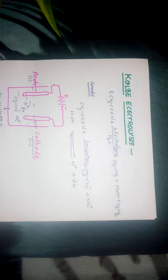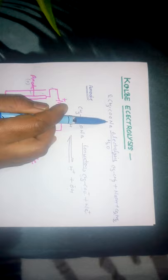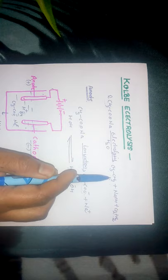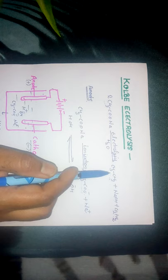Next is Kolbe's electrolysis. In this reaction, an aqueous solution of sodium or potassium salt of acetate is subjected to electrolysis. We get ethane, and the side products are sodium hydroxide, carbon dioxide, and hydrogen gas. The main product is an alkane — the alkyl group in the reactant gives us an alkane with double the number of carbons.